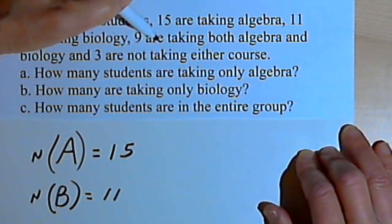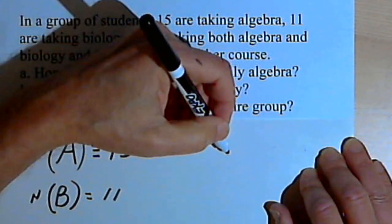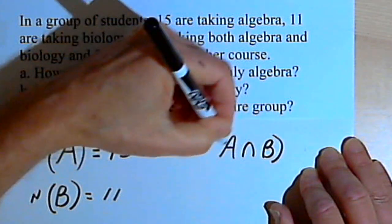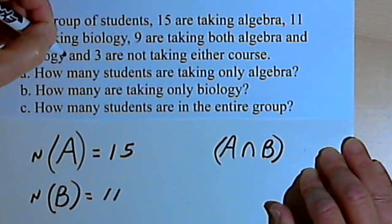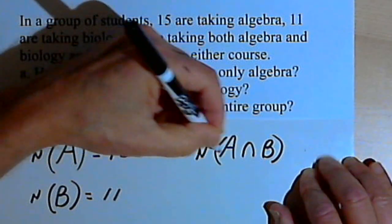I've also found out that there are some students taking both algebra and biology. So that would be the intersection of the algebra students and the biology students. And the number of students taking both algebra and biology is 9.